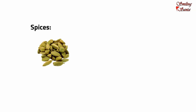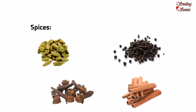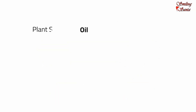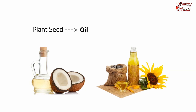We get spices from plants like cardamom, black pepper, clove and cinnamon. Spices add flavor to our food. We get oil from seeds of plants like coconut, mustard and sunflower. Oil is used for cooking and for oiling the hair and body.